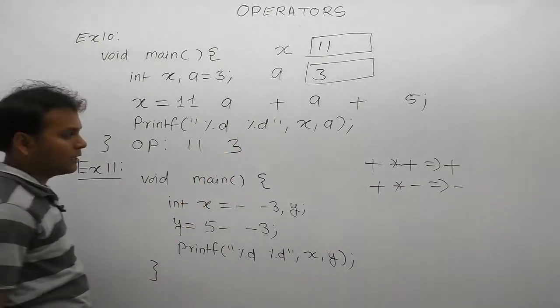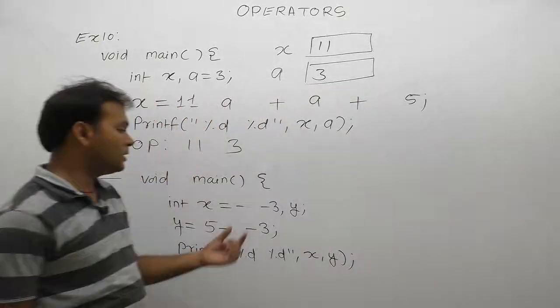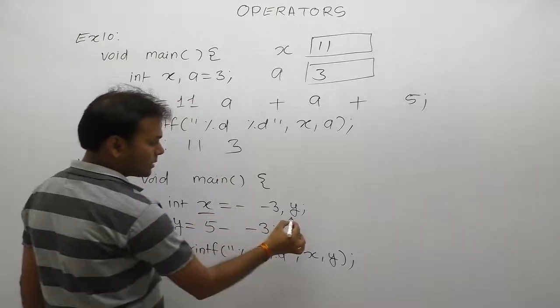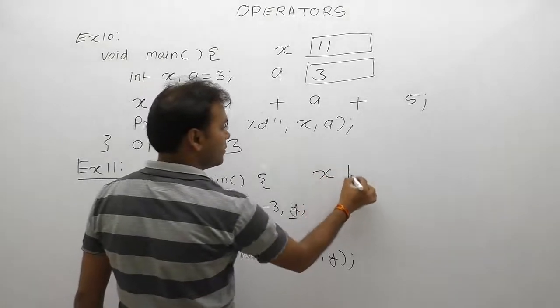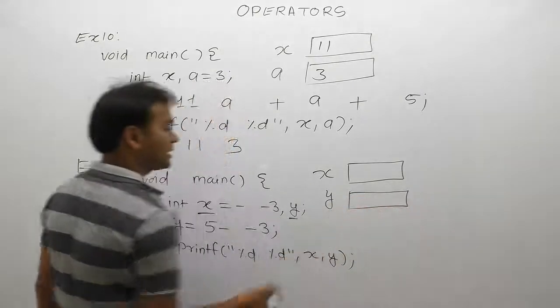Next, the second example. In that case we are testing unary minus operators. Again there are two variable declarations - variable x and variable y. Memory allocation for x and allocation for y.